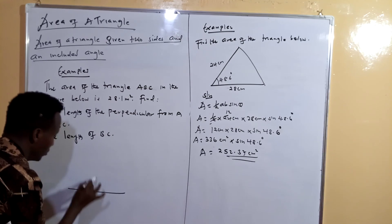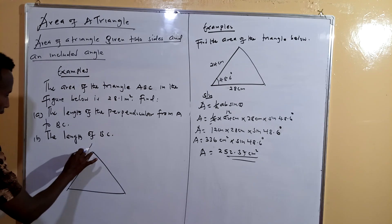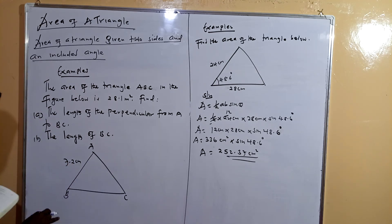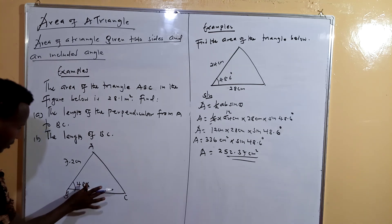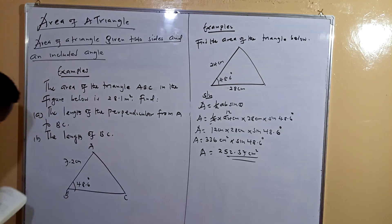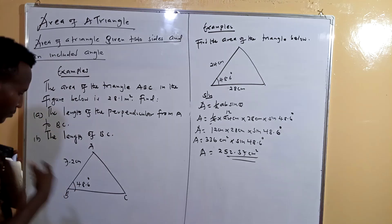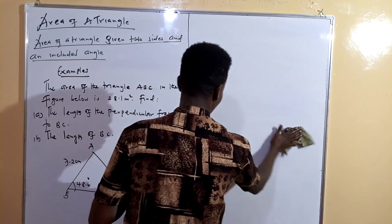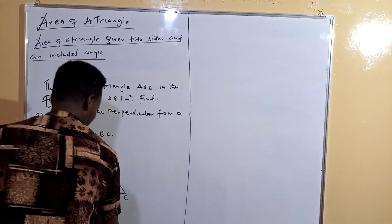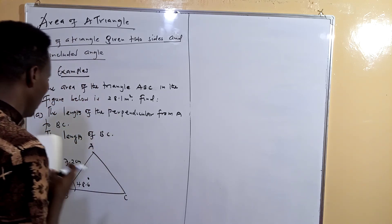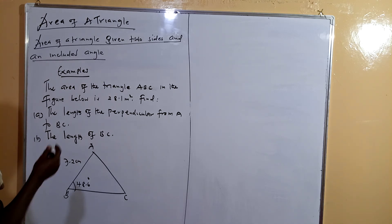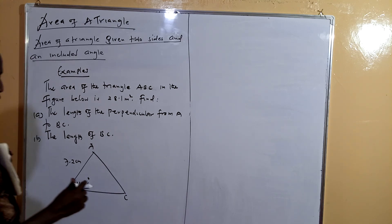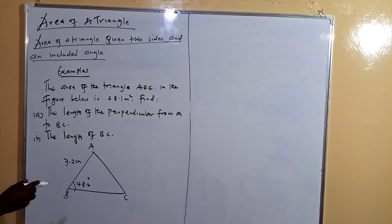Here is the triangle. We have vertices C, A, B, and C. The side given is 7.2 cm, and we also have an angle of 48.6 degrees. The area of triangle ABC in the figure below is 28.1 m². We are asked: first, find the length of the perpendicular from A to BC. Let's drop a line from A and call the point where the perpendicular meets BC as point M.